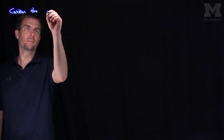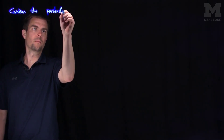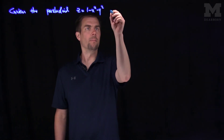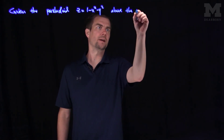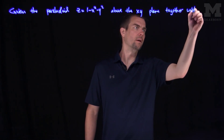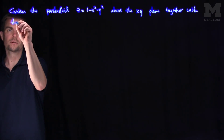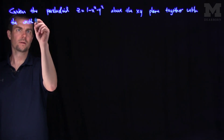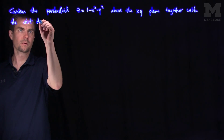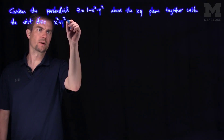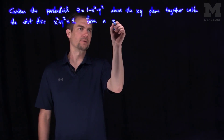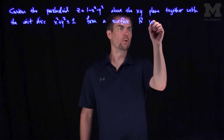Given the paraboloid z equals 1 minus x squared minus y squared above the xy plane, together with the unit disk x squared plus y squared less than or equal to 1, we can form a surface S with outward-pointing normal vector.